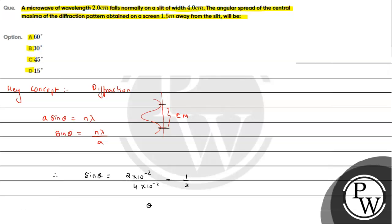Since we need the angular spread of the central maxima, we multiply by 2. Therefore, the angular spread equals 2θ, which is 2 × 30 = 60 degrees. This is the answer: Option A. I hope you understood the solution. All the best!